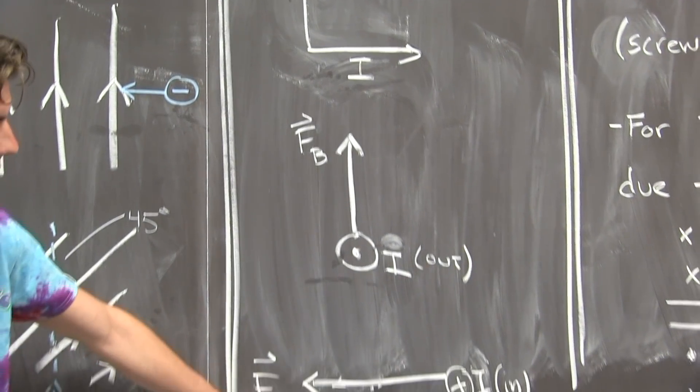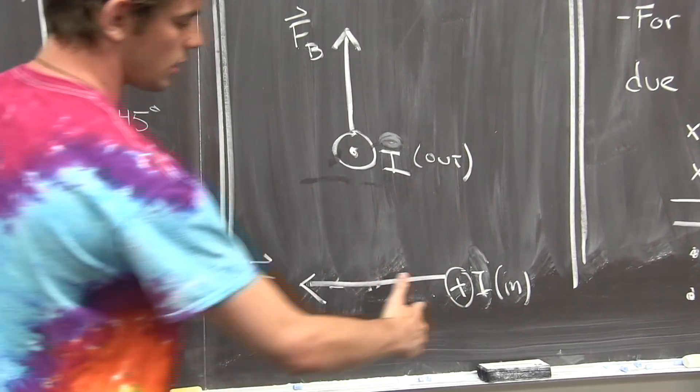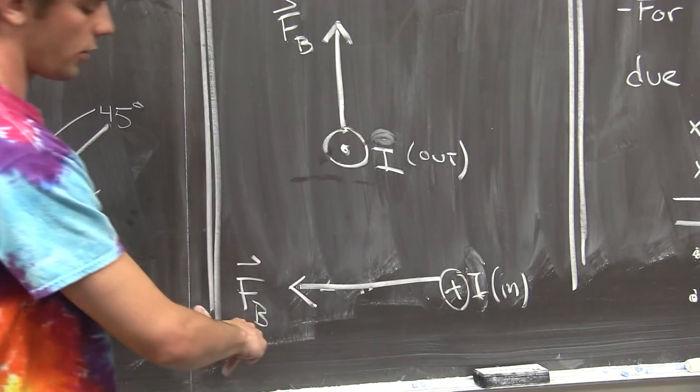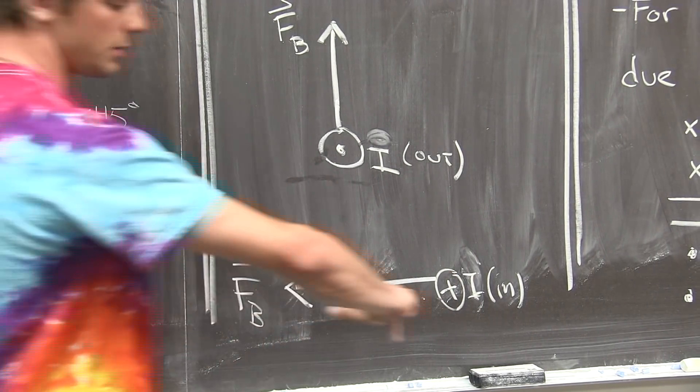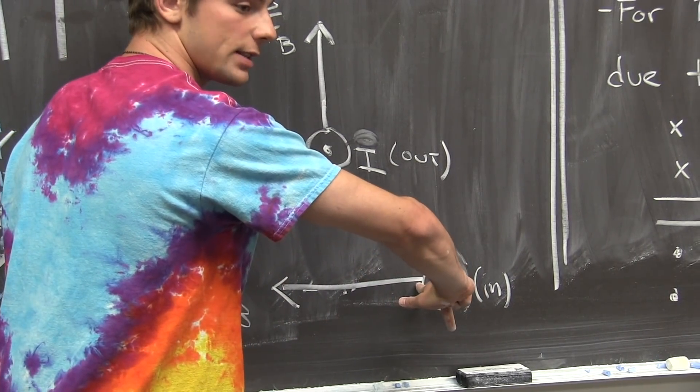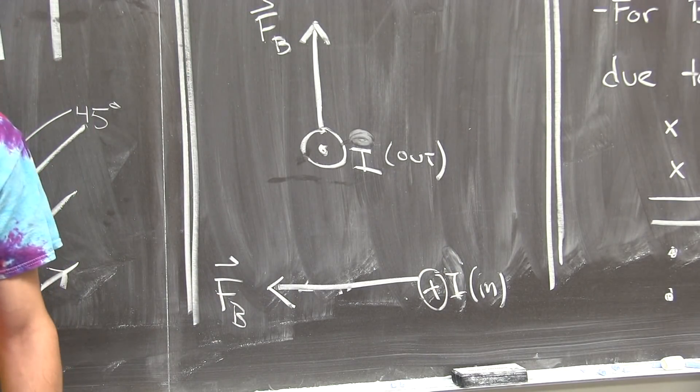For the last example, the current is going into the page, the force is pointed to the left towards me, and so my middle finger is left pointing down, that is where the magnetic field has to be.